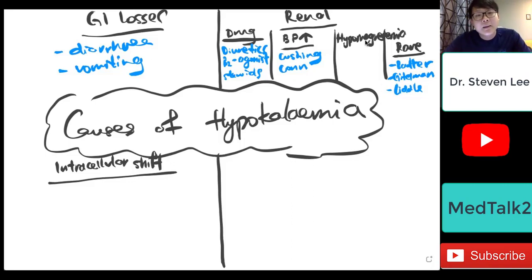But I think it's actually important for us to know. So in the future, we will actually have a look at the pathophysiology, but now let's just keep the video short and simple. So intracellular shift, I would say there are two important causes that we should look at. One is alkalosis.